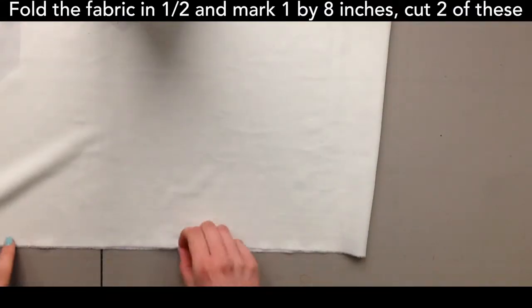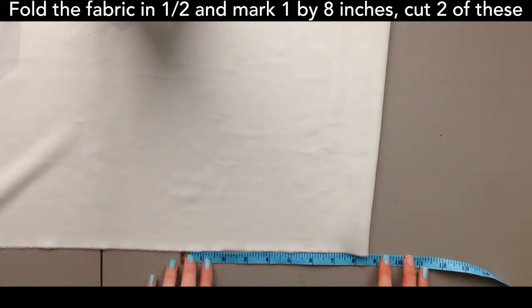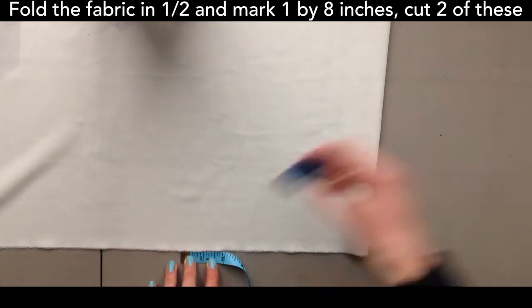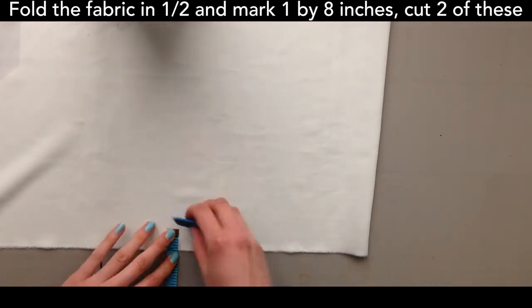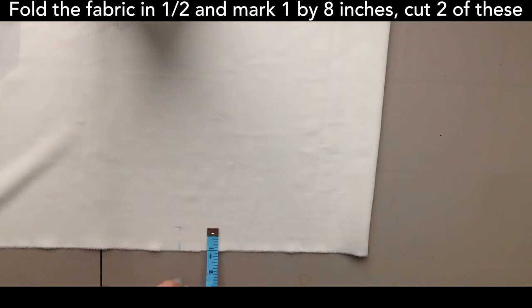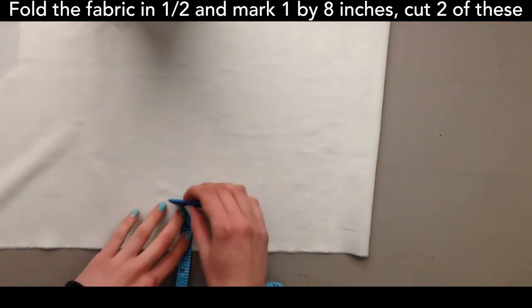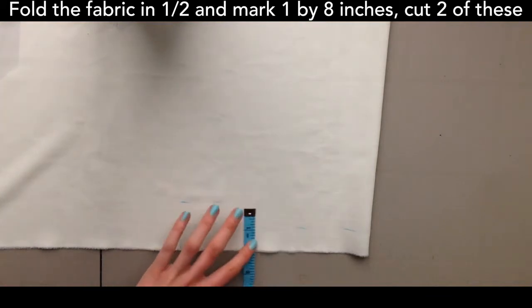So now I'm just marking eight inches on a folded fabric and that's by one inch for the straps. So I'm gonna do two of those and then sew them in half and then turn them inside out, which I had troubles doing. The whole inside out thing was just kind of like the beginning footage.